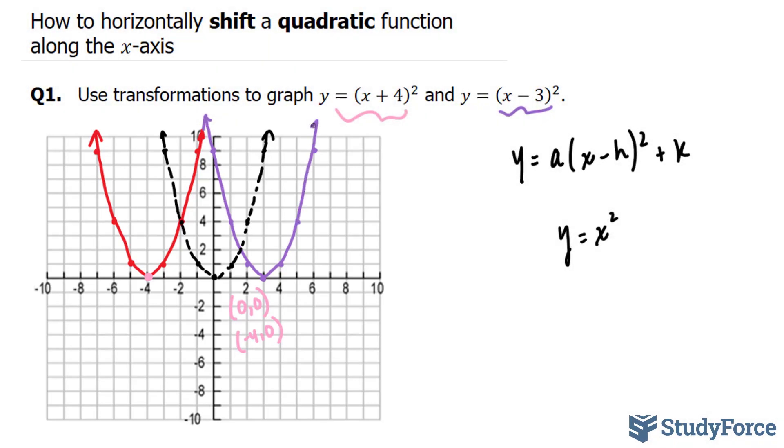So now you know what this h does to the parabola in vertex form. It acts to translate the parabola left or right, which is known as a horizontal shift. And so there you have it—that is how to horizontally shift a quadratic function along the x-axis.